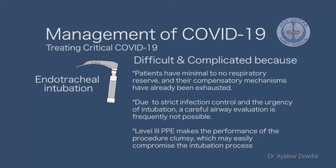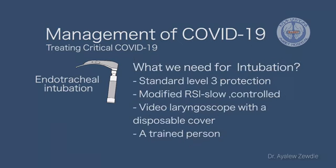Patients will desaturate easily and don't give you time. Due to strict infection control and urgency, a careful airway evaluation may not be possible. We should always anticipate difficult and complicated intubation. Level three personal protective equipment makes performance clumsy, which can easily compromise the intubation process. During intubation, standard level three protection is required. Modified rapid sequence intubation is preferred — a slower, more controlled form. A video laryngoscope with a disposable cover is preferable, performed by a trained and experienced person.